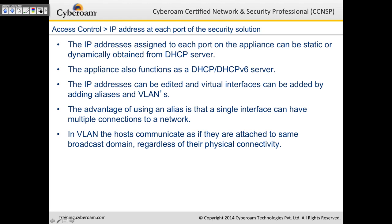IP addresses assigned to each port on the appliance can be static or dynamically obtained from a DHCP server. For a WAN interface with a dynamic IP from your ISP, you can set that interface to get its address from the DHCP server automatically. The appliance itself can function as a DHCP or DHCPv6 server, so CyberROM can lease out IPv4 or IPv6 addresses.